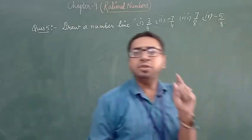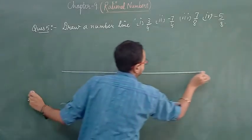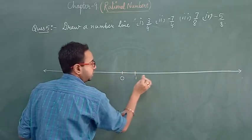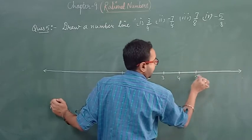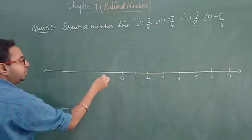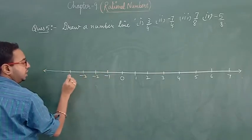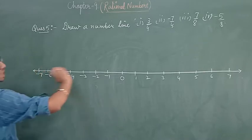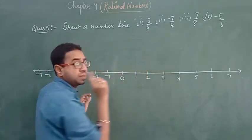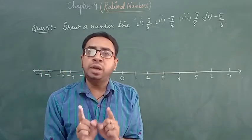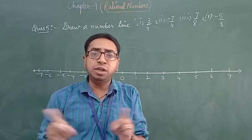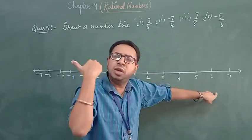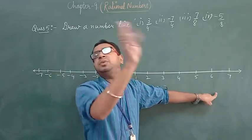The concept is very simple. Draw a line with 0 as the center. Put 1, 2, 3, 4, 5, 6, 7 on the right, and minus 1, minus 2, minus 3, minus 4, minus 5, minus 6, minus 7 on the left. If the denominators are the same, you can represent all rational numbers on the same number line.